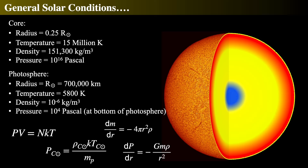The core conditions are: the core is about a quarter of the entire radius of the Sun, the temperature is about 15 million Kelvin, and the density is about 151,300 kilograms per cubic meter. By comparison, the surface photosphere has a radius of about 700,000 kilometers, a temperature of about 6,000 Kelvin, and a much, much lower density. These basic arguments using hydrostatic equilibrium, the ideal gas law, and the mass continuity equation give us the central density and temperature — understood well before modern computers.